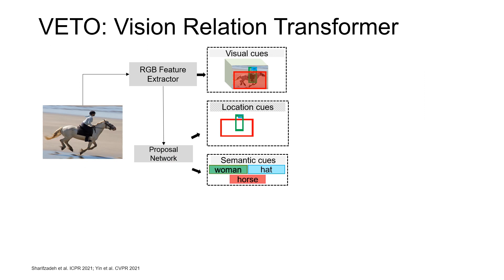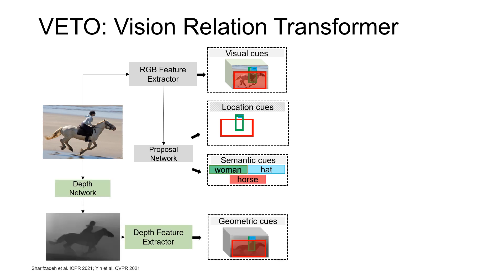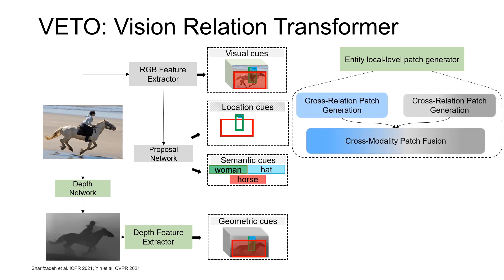To overcome these challenges, we propose V2, a Vision Relation Transformer. It uses the same backbone and proposal network as our baselines, but generates depth-related geometry cues using a depth network and depth feature extractor. Most importantly, V2 employs an entity local-level patch generator instead of global projection, which includes cross-relation and cross-modality modules.